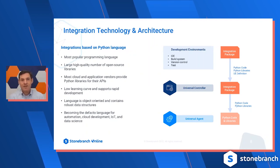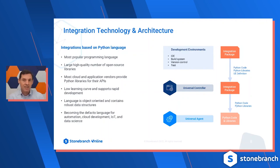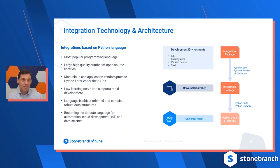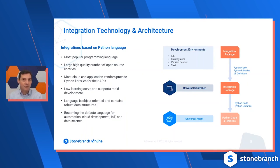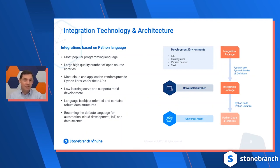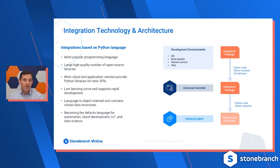We chose the Python language because it's one of the most popular programming languages, widely used in the cloud ecosystem. It's easy to learn — a good bridge between the scripting world and programming languages like Java and C#. Python also has a large number of open-source libraries, and most application vendors are creating Python libraries that wrap their APIs, so there's a lot of reusability to pull into your extensions and speed up development across many systems.